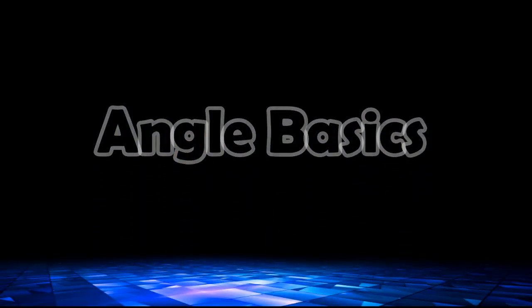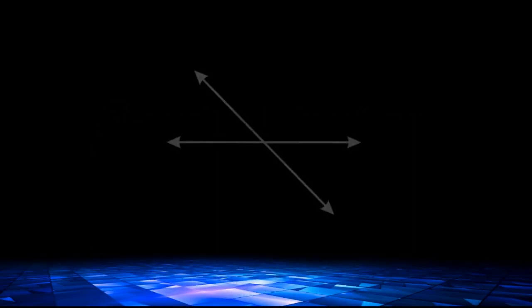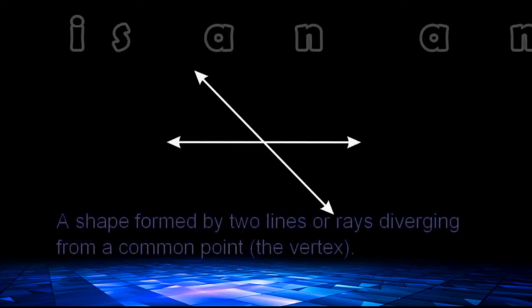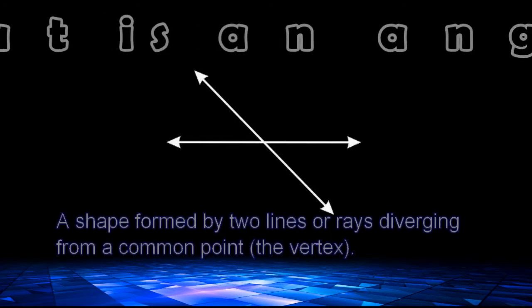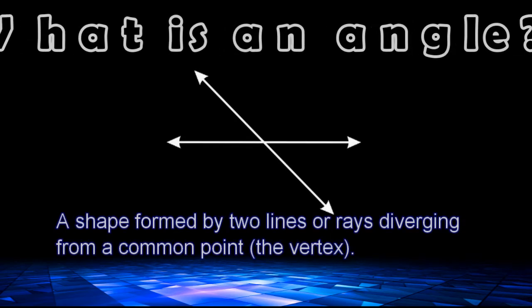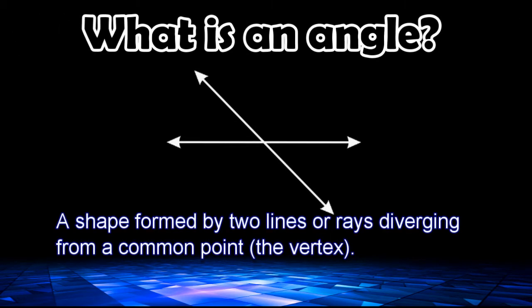This is Mr. Masonette, and today we're just going to review a few basics about angles. Well, what exactly is an angle? An angle is just a shape formed by two lines or rays that intersect each other.